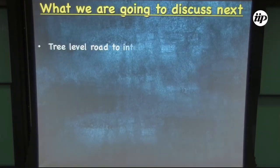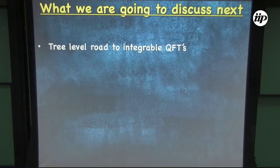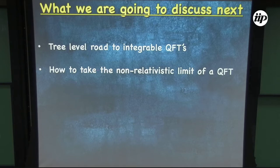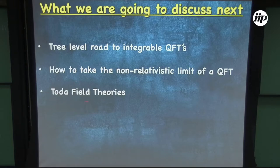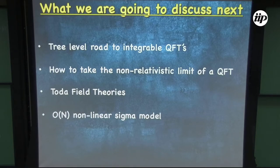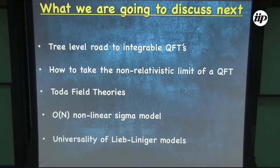Today I'm going to explore the limit where the velocity of light is sent to infinity. However, sending c to infinity alone gives the mass an infinite gap — since the mass energy is mc^2 — so you also have to tune the coupling constant. In the example I'll show, the tuning is done by sending g to zero. The concept is that you cannot naively take c to infinity; you need a double limit to keep the energy of excitations finite.